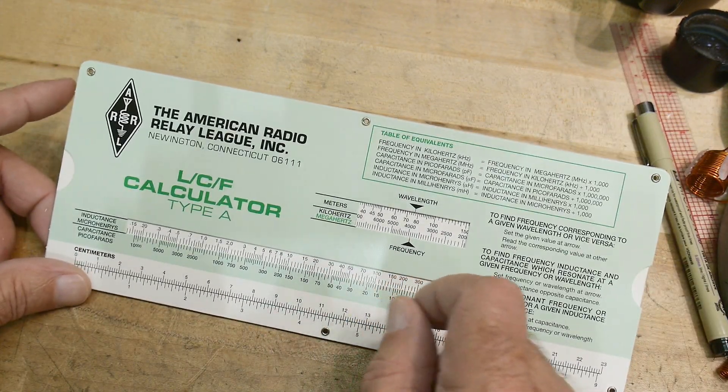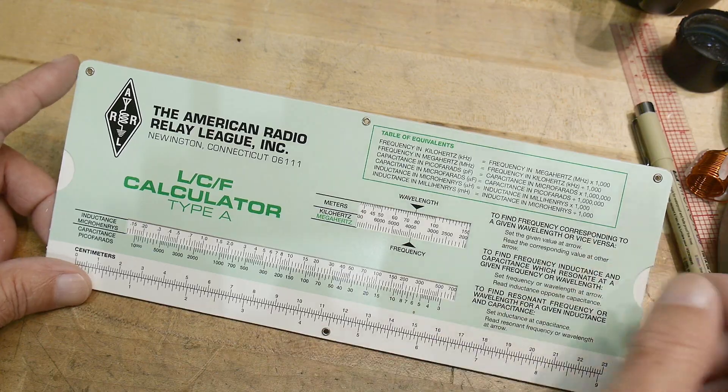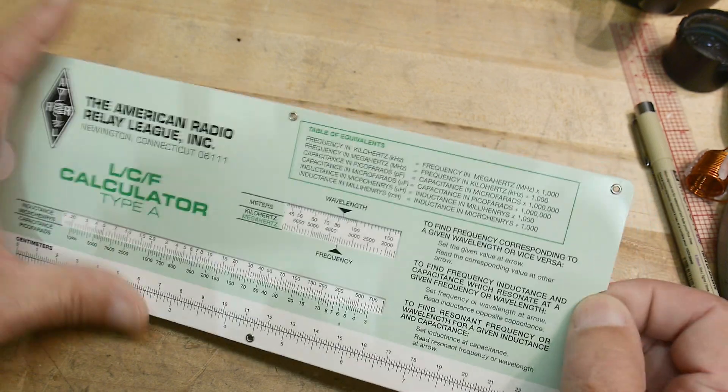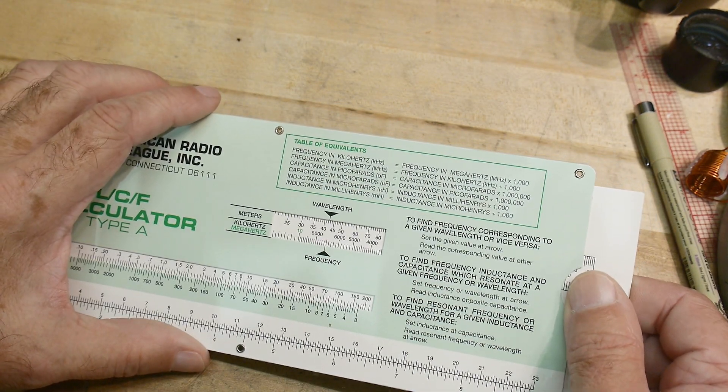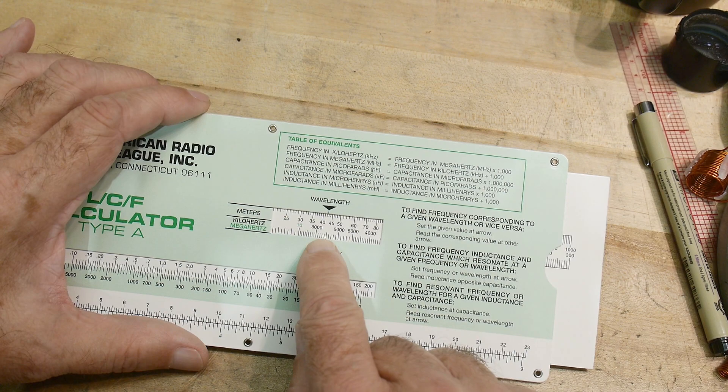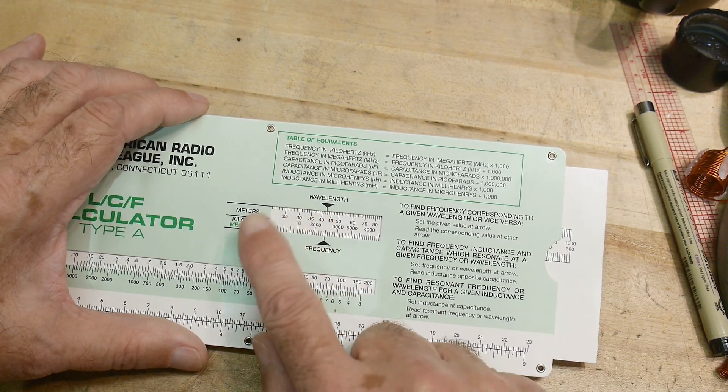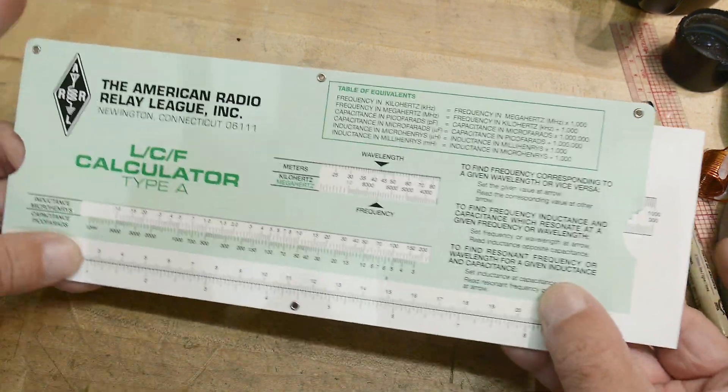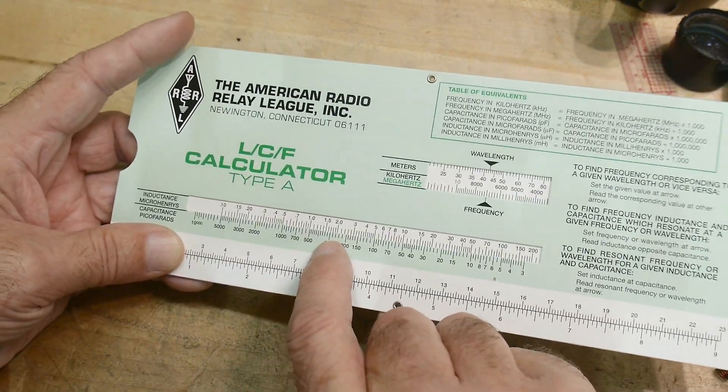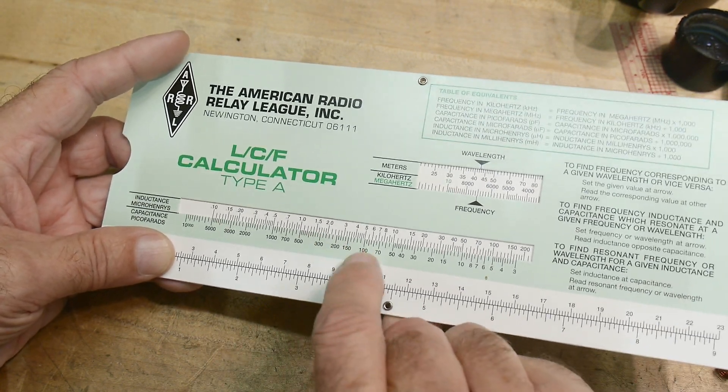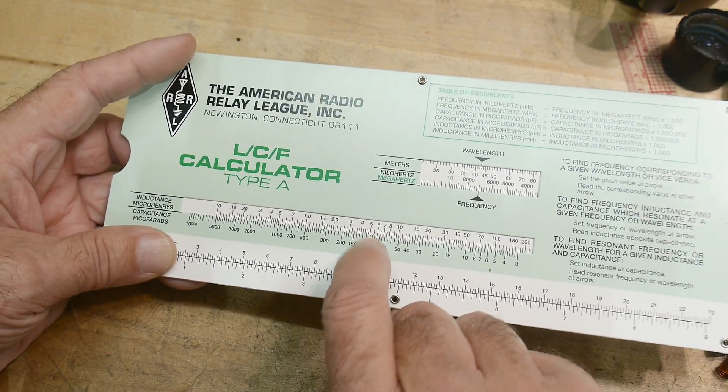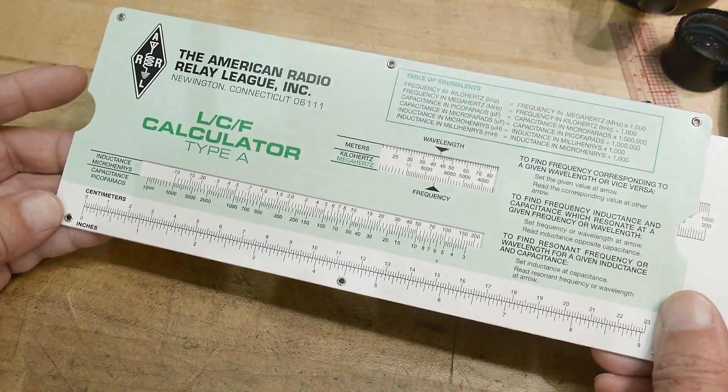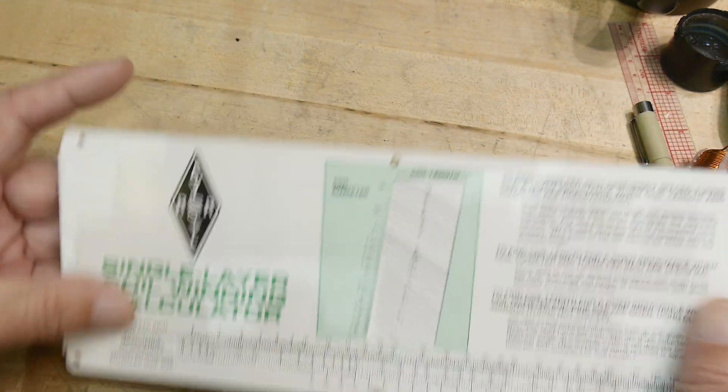So this side will tell you a resonance, right? So you can pick a particular frequency you want to resonate at. So let's say we want to resonate at seven megahertz. So you put in seven megahertz, tells you that's 43 meters, it's not 40 meters, it's 43 meters. And then you can go here and for a particular capacitance, let's say a hundred puff, you need about five micro Henry. So five micro Henrys at a hundred puff will resonate at seven megahertz. So super cool on this side, but this is the one we want on the backside.